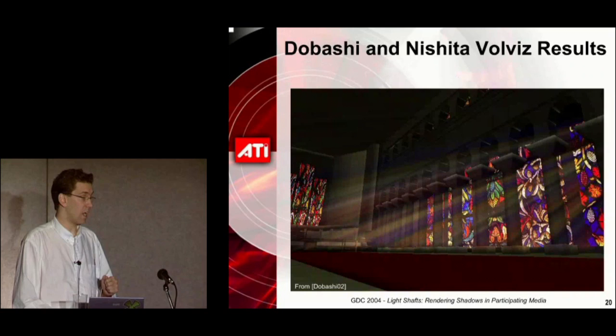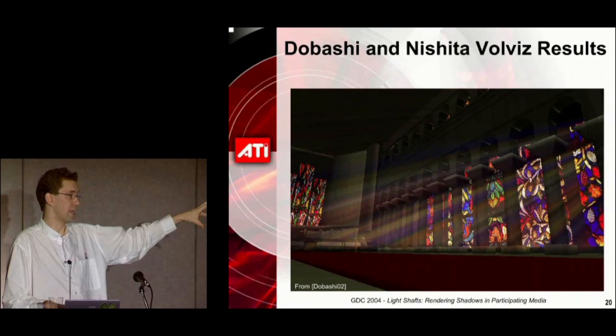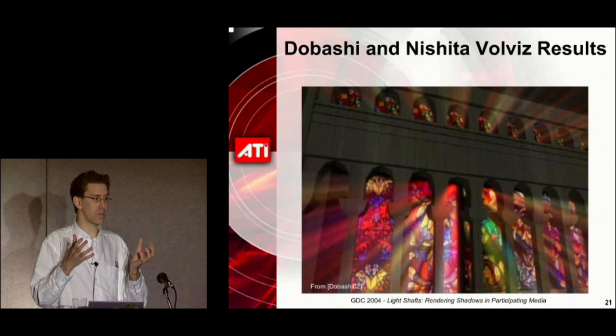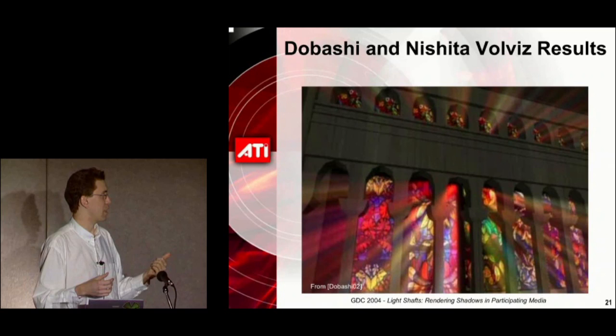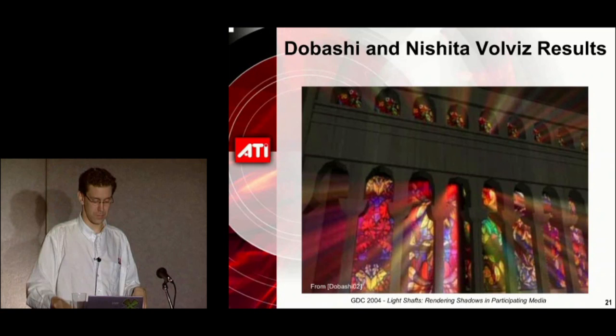Here's a screenshot of some of their results. In this church setting they have a stained glass window, and there are nice colored light shafts coming down from the window. The techniques that try to model a volume of particles and add and subtract front and back faces wouldn't really have a hope of capturing the coloring of those light streaks from a stained glass window or a colored cookie texture like you might have in a stage lighting scenario.